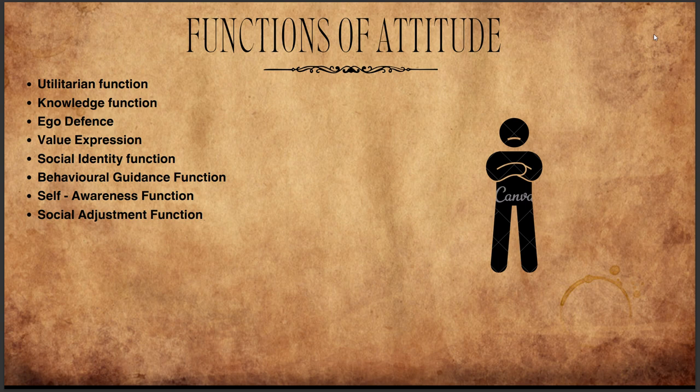Next is the knowledge function. Attitudes serve a knowledge function by organizing and simplifying information about the social world. They help us identify problems in other parts of the country and simplify information. For example, if given a chance to visit Syria during the ISIS regime, as a civil servant you would definitely avoid it — that is what the knowledge function is about.